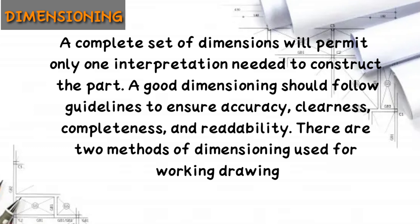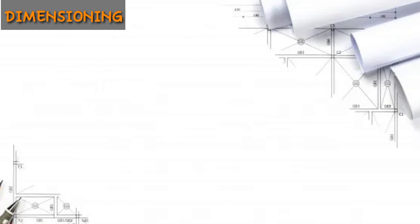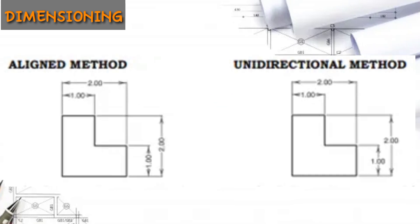There are two methods of dimensioning used for working drawings. The first is the aligned method, where all dimensions are placed aligned with the dimension line and can be read from either the bottom or right side of the paper — this is the old method. The second is the unidirectional method, where all dimensions are read from the bottom of the page — this is the current method.